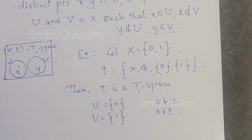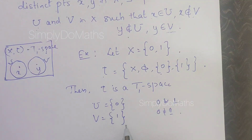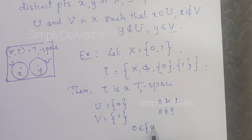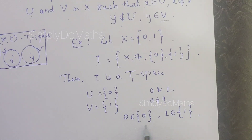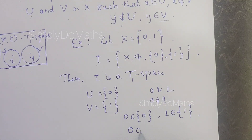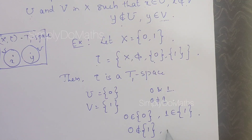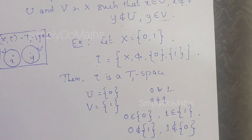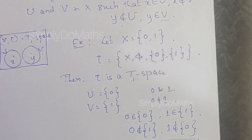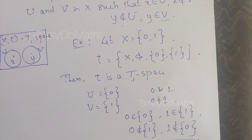We can verify that 0 belongs to open set U and 1 belongs to open set V, but 0 doesn't belong to V = {1} and 1 doesn't belong to U = {0}. This satisfies the definition of T1 space.